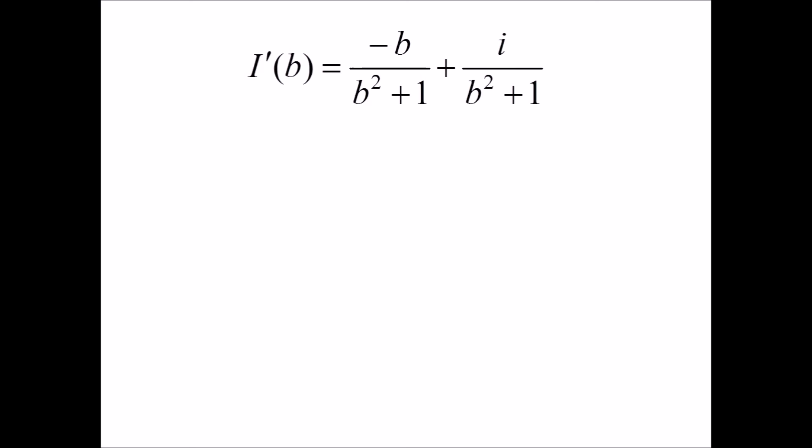We get that the partial of i of b equals negative b over b squared plus one plus i over b squared plus one.